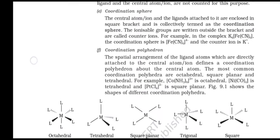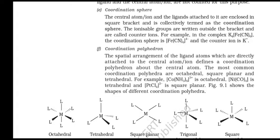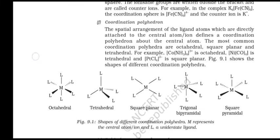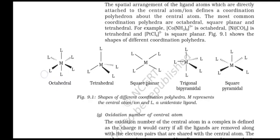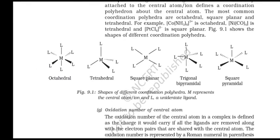Coordination Sphere: The central atom and the ligands attached to it, enclosed in square brackets, are collectively termed the coordination sphere. The ionizable groups are written outside the bracket and are called counter ions. For example, in K4[Fe(CN)6], the coordination sphere is [Fe(CN)6]4- and the counter ion is K+. Coordination Polyhedron: The spatial arrangement of ligand atoms directly attached to the central atom defines a coordination polyhedron. The most common coordination polyhedra are octahedral, square planar, and tetrahedral. For example, [Co(NH3)6]3+ is octahedral, Ni(CO)4 is tetrahedral, and [PtCl4]2- is square planar.